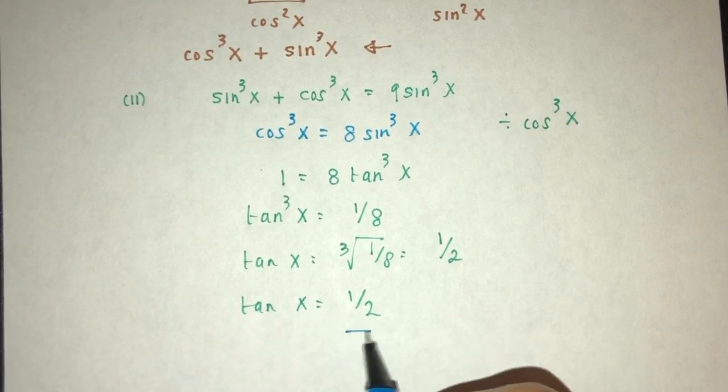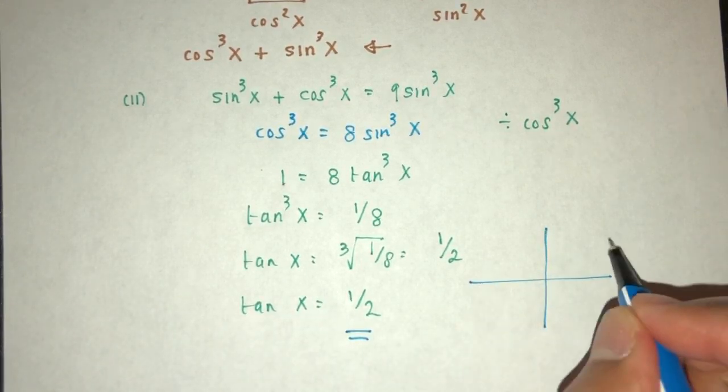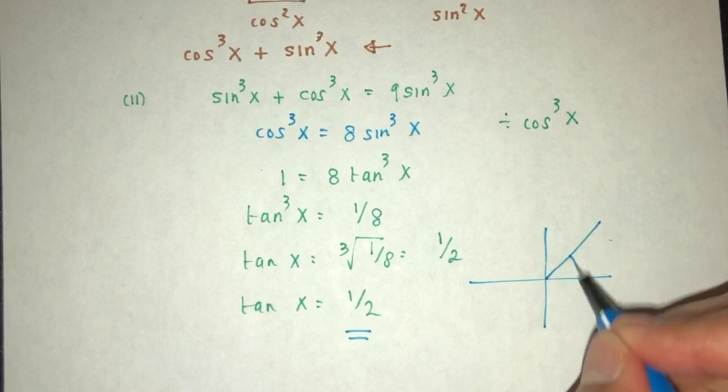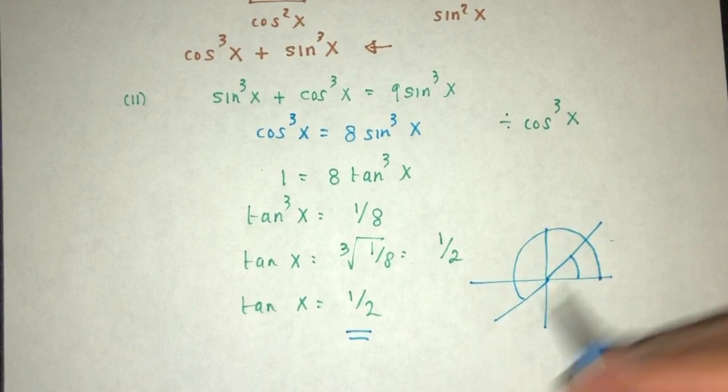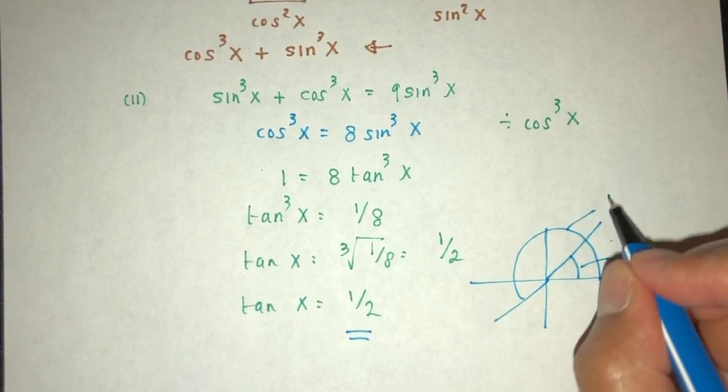Now we can see it is a positive value. So according to the quadrants ASTC, it will be in the first quadrant and in the third quadrant. This is simply your angle x and that will be 180 plus x. So let's find that value.